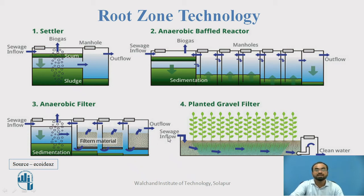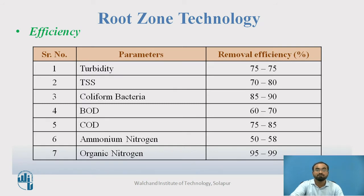The effluent from the anaerobic filter is taken to the planted gravel filter — that is our root zone technology main stage — where the inlet water passes through gravel in which reed plants have been implanted. The cleaner output water is collected and reused for gardening, bathrooms, or toilets. This demonstrates how reuse of wastewater can easily happen. Now, talking about the efficiency of root zone technology.